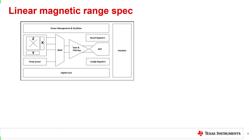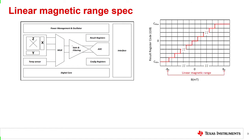Before going into the different datasheet specs, let's briefly discuss how a 3D linear Hall sensor typically works. The picture on the top left shows an example block diagram of a 3D linear Hall effect sensor. A 3D Hall sensor typically has a precision analog signal chain along with an integrated ADC to digitize the measured analog magnetic field values for each axis. The measured magnetic field values are stored in results registers. The picture on the top right shows the ideal mapping of the magnetic flux density of an axis to the corresponding result register value, where Cmin and Cmax represent the minimum and maximum values, respectively, that can be represented in the results register. A communication interface such as SPI or I2C is used to communicate to a microcontroller so the microcontroller can retrieve the sensed magnetic field values.